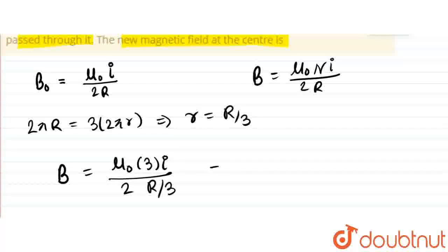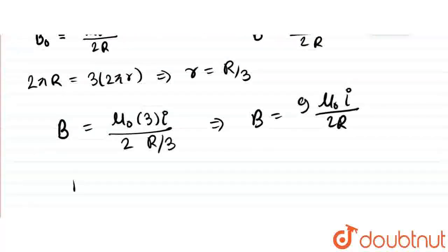So B equals μ₀(3)I divided by 2(R/3), which gives B = 9μ₀I/2R. If you can see here, it is simply B = 9 times B-note.